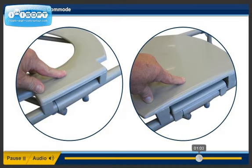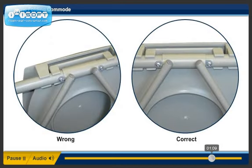Step 7. Snap the seat and cover onto the rear frame. Step 8. Make sure the seat and cover are centered on the rear frame.